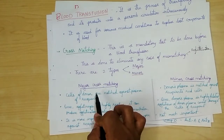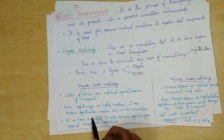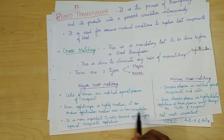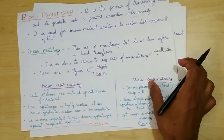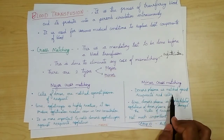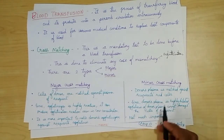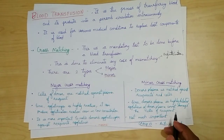Cross matching is divided into two types: major and minor. In major cross matching, the cells of the donor are matched against the plasma of the recipient. Since the agglutinogen is highly reactive and can produce agglutination reactions even at low concentrations, it is more important to match the donor's agglutinogen against the recipient's agglutinin. In minor cross matching, the donor's plasma is matched against the recipient's red cells.